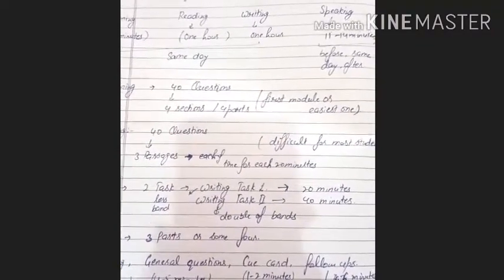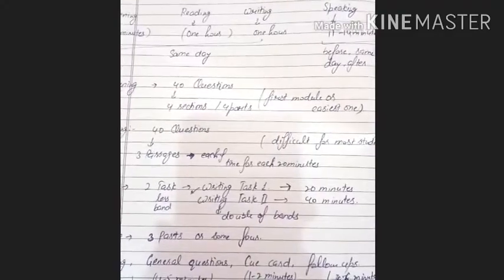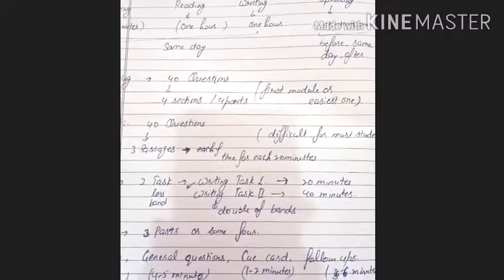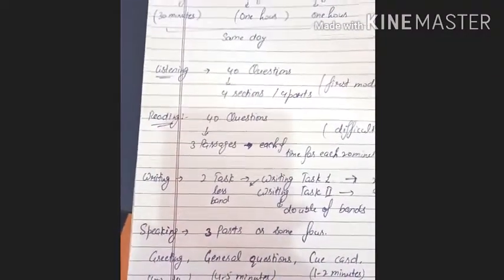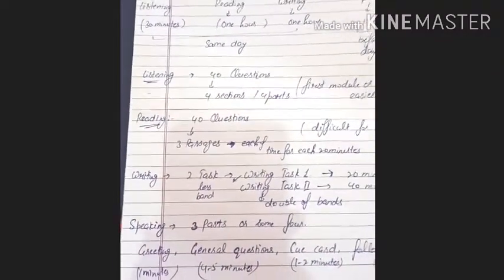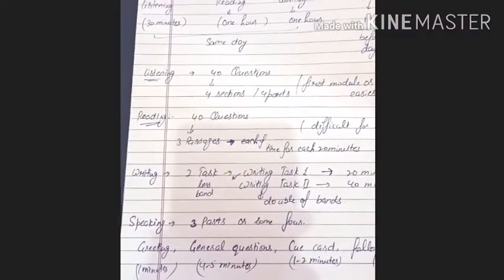If we have achieved 5.5 in writing task 1 and 6.5 in writing task 2, then our band score is going to be 6.5 because the writing task 2 is worth double. 6.5 plus 6.5 then addition of 5.5. After that, this is divided into 3 and there is a band score for writing.